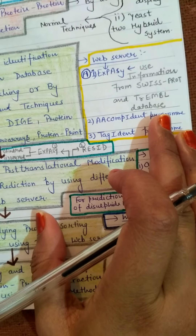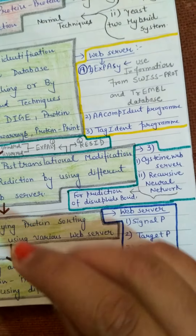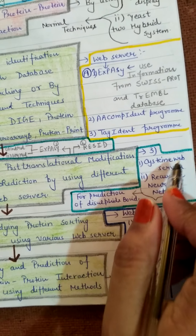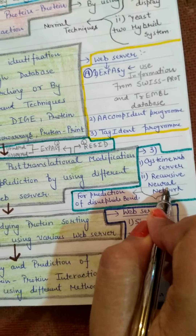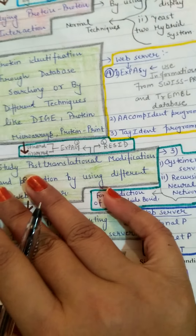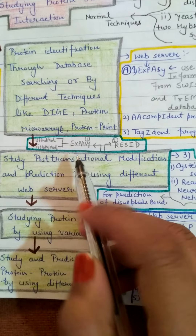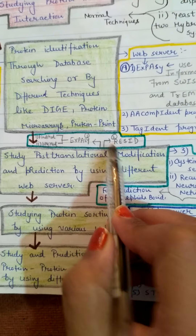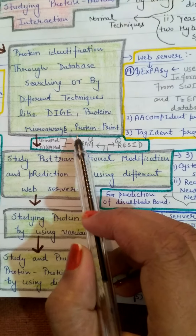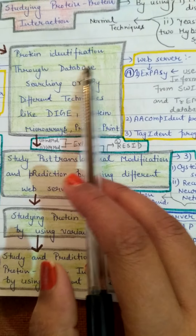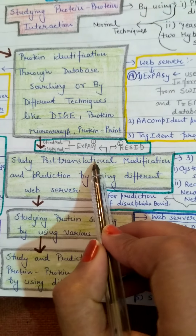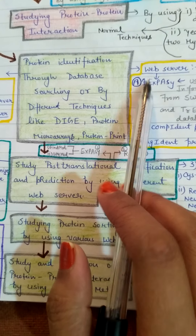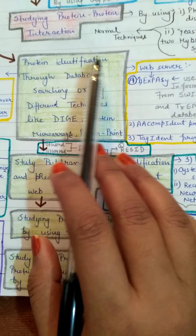We have seen that we will study post-translation modification. If there is a post-translation modification in our protein, we will use different types of web servers. There was a web server based on SVM, which is a statistical approach that will minimize our false positive results. The second one is the automatic web server, used for our protein sequence. The third one is the Systeen Server and Recursive Neural Network. We also have a post-translation modification in which we will study the disulfide bond.